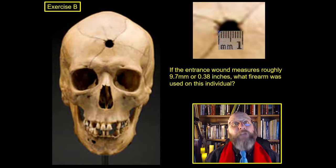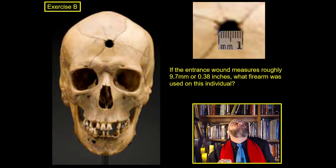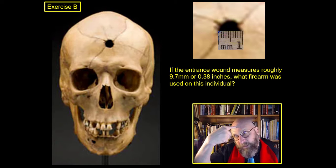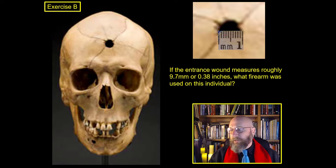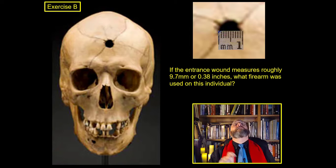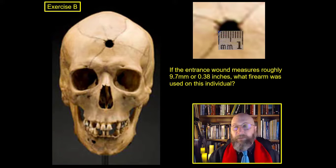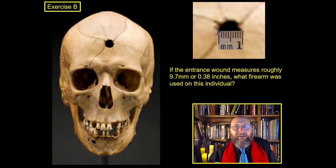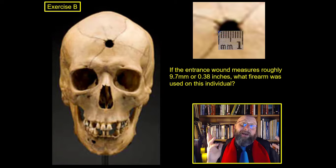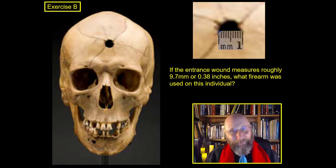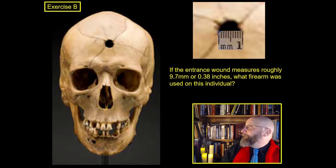Here is Exercise B of our series of forensic exercises. This individual obviously has an entrance wound in the center of their forehead. We're going to measure that entrance wound, which we determined is 9.7 millimeters across — or in freedom units, 0.38 inches. So using the powers of your own brain, determine the bullet that was used on this poor person.